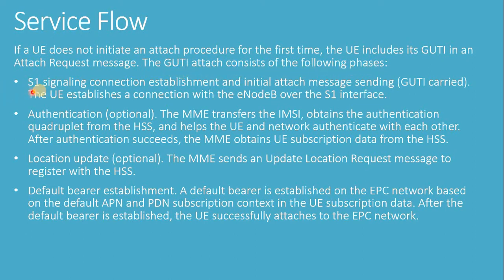Phase 1 - S1 Signaling Connection Establishment and Initial Attach Message Sending: The UE establishes a connection with the E-NodeB over the S1 interface. If you are interested in understanding the network interfaces like S1, please refer to relevant lectures for which a link has been placed in the description of the video.